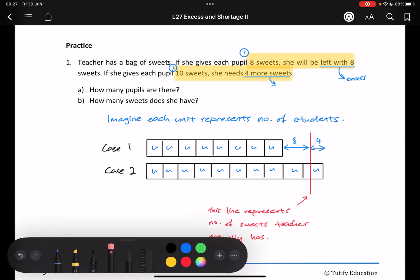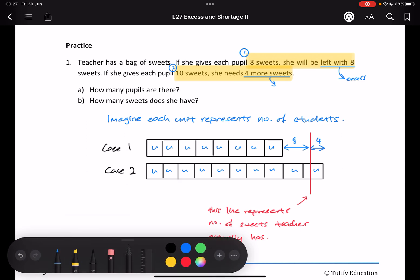Now, remember the answer. 56 sweets and six students, right?